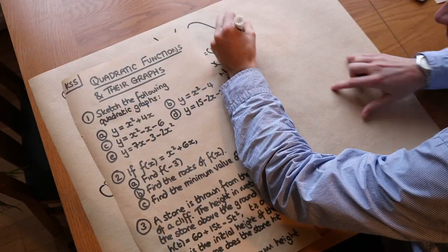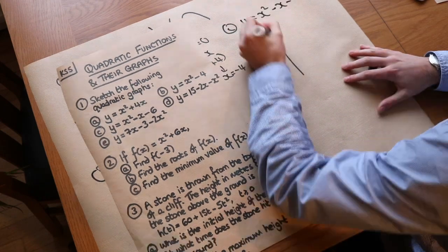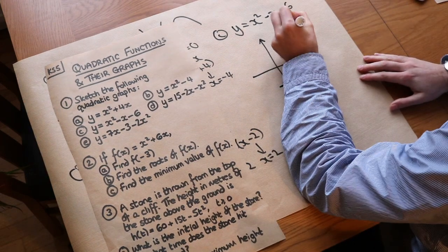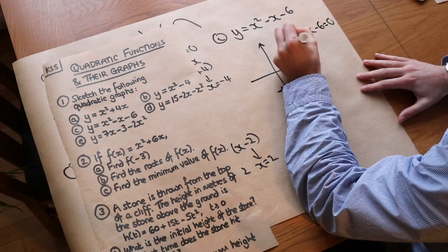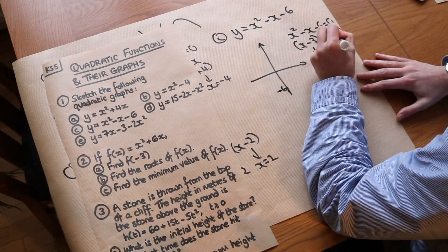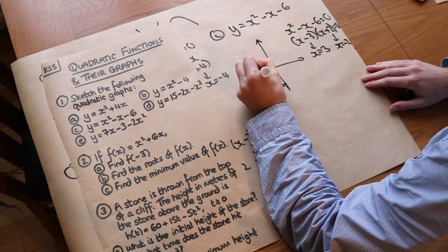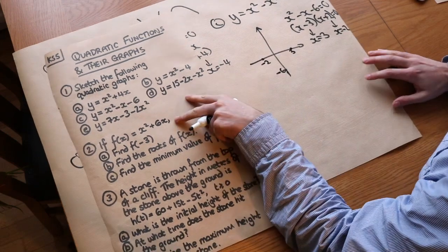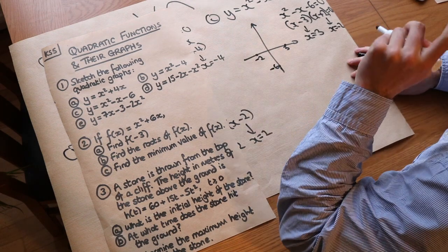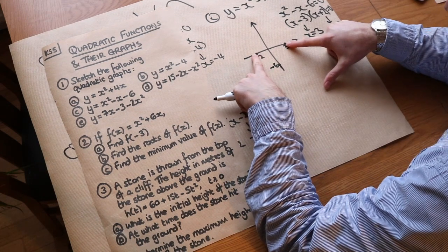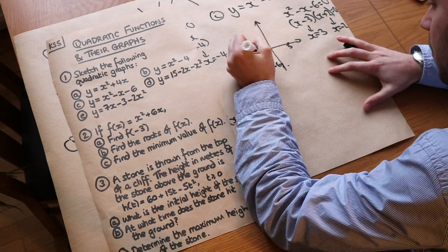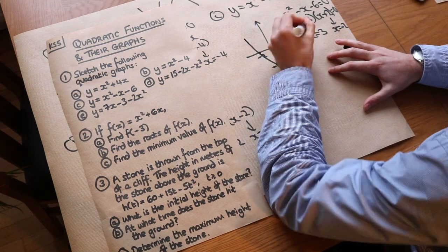For C, y equals x squared minus x minus 6. The constant term tells us the y intercept is minus 6. For the x intercepts we make y equal to 0 and factorise: (x minus 3)(x plus 2) equals 0, so x equals 3 or x equals minus 2. Be careful when sketching because the minimum point is not at minus 6 — quadratic graphs are symmetrical so the minimum point will be halfway between minus 2 and 3, which is slightly after the y axis.